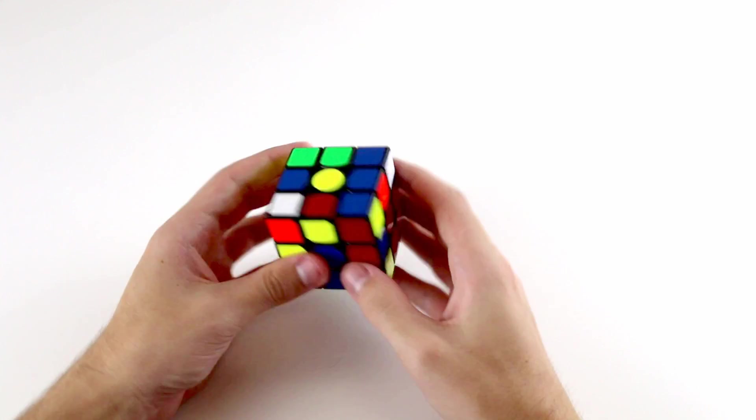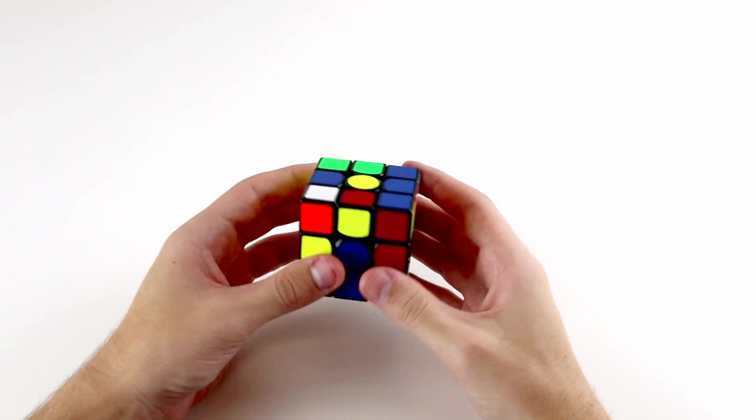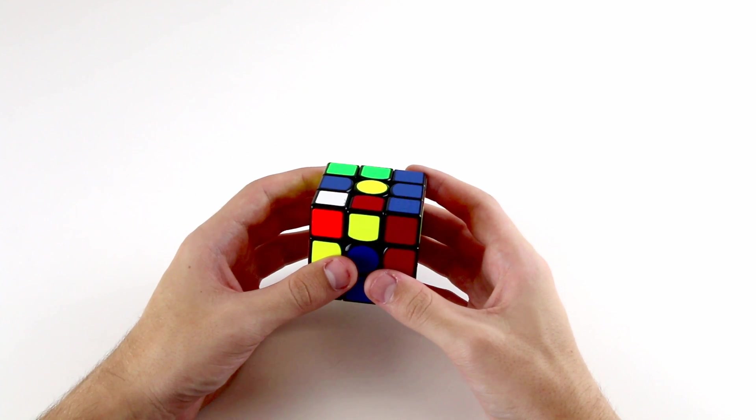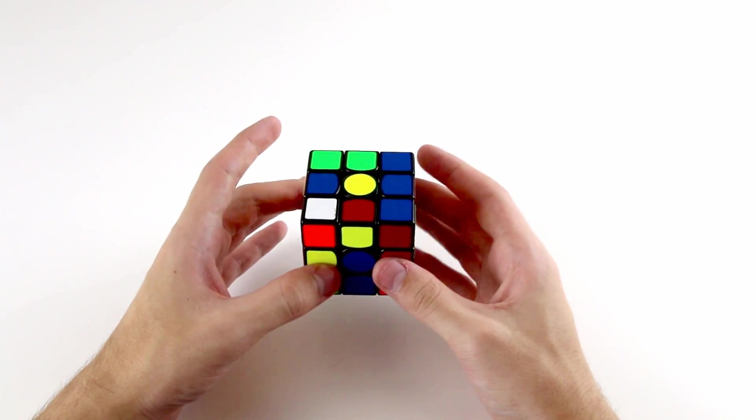When you do this sort of thing, you'll actually find that a lot of the F2L pairs that you try to track will either be extremely difficult or the pieces will end up in really bad positions.